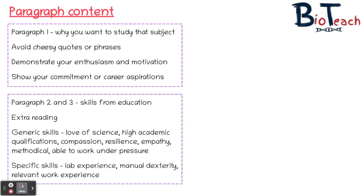The middle paragraph should highlight the skills you have from your education — things like extra reading you may have done or any courses you've undertaken. It's really important at this stage to get to know the course content for the subject you've applied for. I'd recommend visiting university websites to research which skills are crucial to your success as a student. Try to make it fairly obvious which course you're applying for. From my experience as a UCAS tutor at a sixth form college, there are many generic skills that science students can mention.